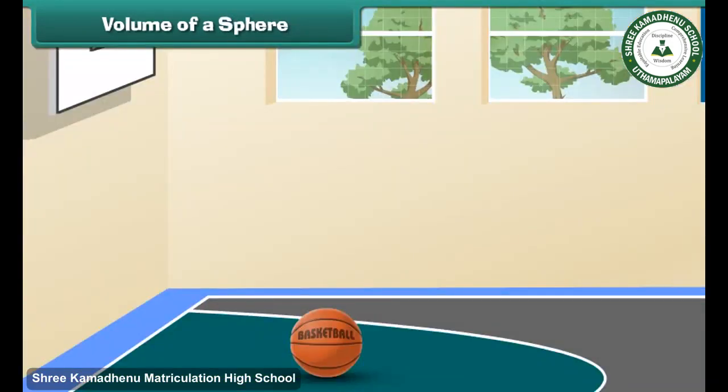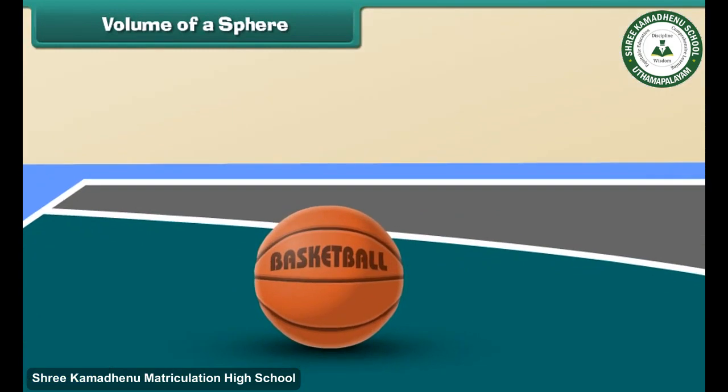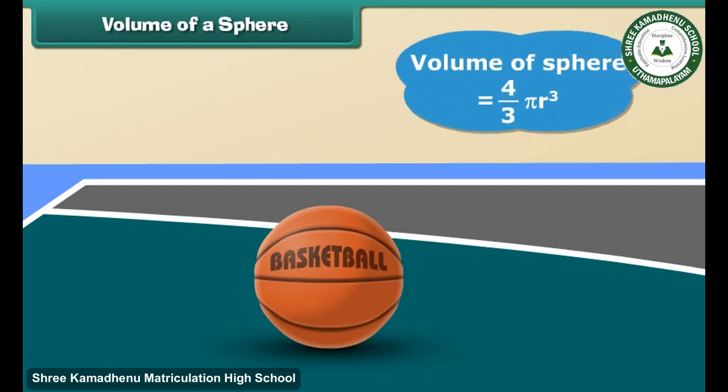What do we call this round ball? Yes, it's a sphere. It looks same from every angle, isn't it? The formula to find the volume of this sphere V is 4 over 3 pi R cube.